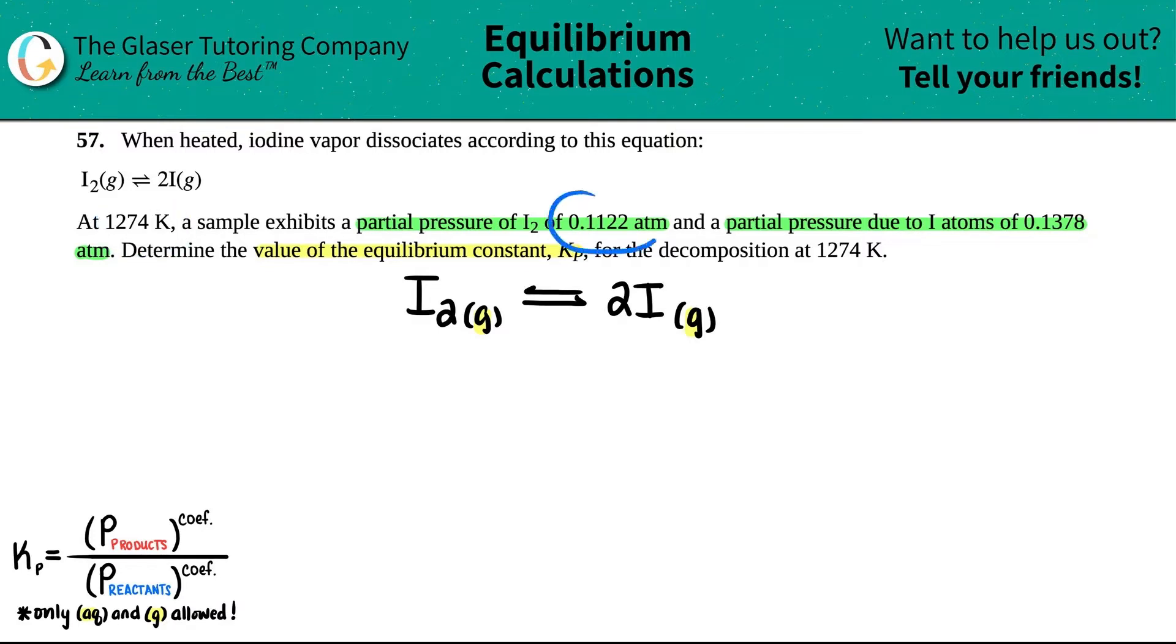They said that at 1274 Kelvin, a sample exhibits a partial pressure of 0.1122 atm for I₂ and a partial pressure of 0.1378 atm. I'm going to assume that these values are at equilibrium. Since they told us at this temperature and wanted us to know the Kp for the temperature, these are equilibrium values.